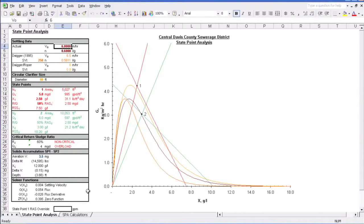This is one version of an interactive state point diagram that can be used as a tool in clarifier operation. As you can see, this model has three methods for developing settling curves. The first is based on actual measured clarifier characteristics. The second is an approximation developed by Dr. Glenn Diger. The third is a modification on the Diger model called the Diger-Roper.